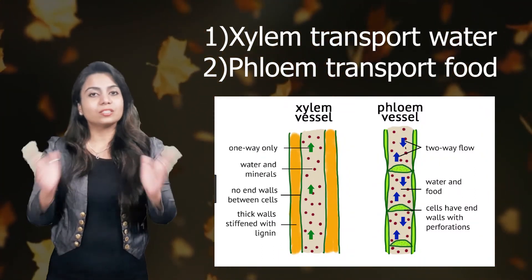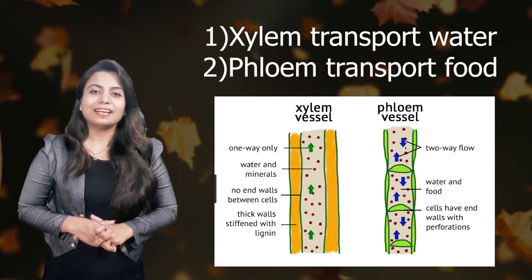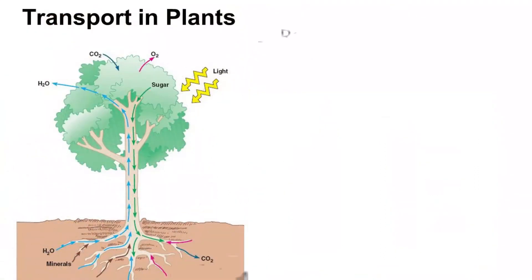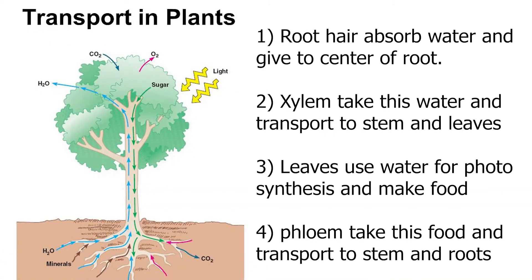Now, how this transportation takes place, let's understand it better. Look at the screen, everyone. Here, you can see a big tree and there are arrows you can see. Green arrows as well as blue arrows showing the transportation with the help of xylem and phloem. So, first of all, let me explain you how xylem transports.